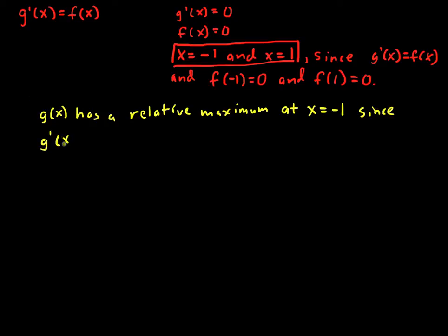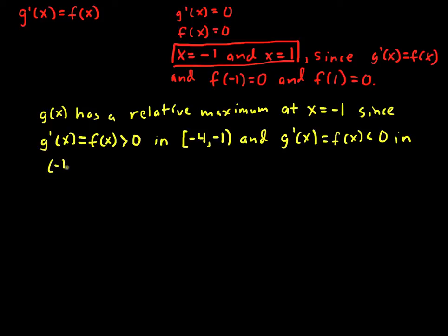g prime of x, I'm going to be very clear, g prime of x equal to f of x is greater than 0 in the interval negative 4, negative 1, not including the negative 1, and g prime of x equal to f of x is less than 0 in the interval negative 1, 1.